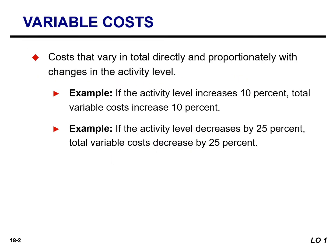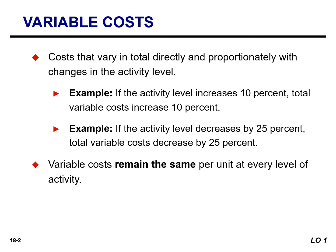Variable costs are costs that vary in total directly and proportionately with changes in the activity level. If the activity increases 10%, our total variable costs will also increase by 10%. Whereas if the activity level decreases by 25%, variable costs will also decrease by 25%. Variable costs remain the same per unit at every level of activity. Examples of variable costs include direct materials and direct labor for a manufacturer, cost of goods sold, sales commission, freight out, and gasoline in airline and trucking companies.